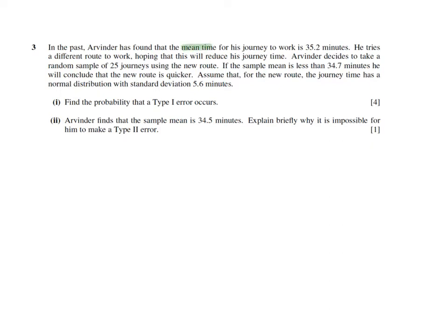So we see that the mean time of his journey to work is 35.2, therefore mean of the population is 35.2. I keep reading. He tries a different route to work, hoping that this will reduce his journey time. Arvinder decides to take a random sample of 25 journeys. Random sample of 25 journeys. So n is 25.